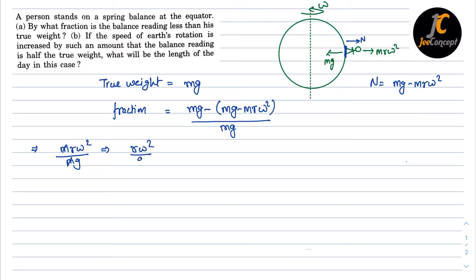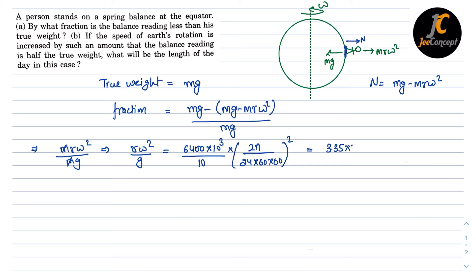Here r is Earth's radius, which is 6400 km, that is 6.4×10³ m. Omega is 2π divided by (24×60×60). Substituting these values into r·ω²/g, we get 3.35×10⁻³. So this is the fraction by which the balance reading is less than the true weight.